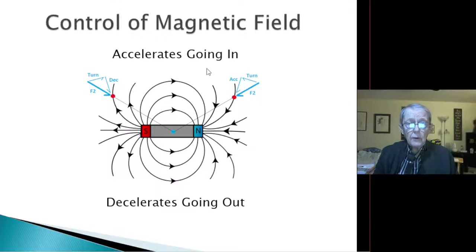This is decreasing the velocity, and this is perpendicular to that turning it. So you have F2, G2 gravity, controlling it such that the magnetic field accelerates to here, and then decelerates out. Acceleration in, deceleration going out.